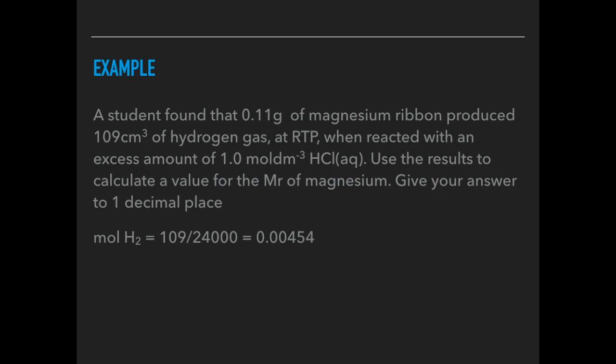The moles of hydrogen is 109 divided by 24,000, which equals 0.00454. The moles of magnesium is the same at 0.00454 in a 1:1 ratio. Mr would be 0.11 divided by 0.00454 equals 24.2 gmol⁻¹. Remember on the datasheet, the Mr of magnesium is 24.3. Obviously these are based on experimental results, and so you're not going to get necessarily the same value as the datasheet.